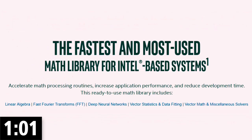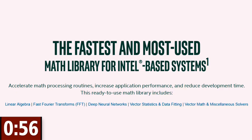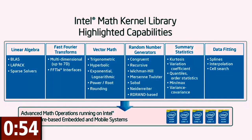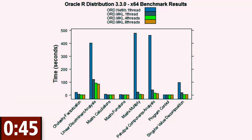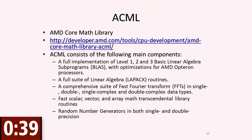Also, Intel provides a library, the MKL or Math Kernel library, which utilizes specific processor features to help increase the performance of threaded and factorized math functions. This library is included in Oracle R Enterprise by default and dynamically loaded. A great performance benefit can be observed when using this library on certain calculations. For AMD and Solaris, similar libraries are also included and loaded by default.